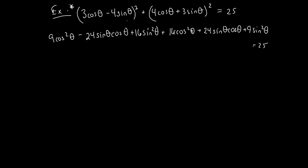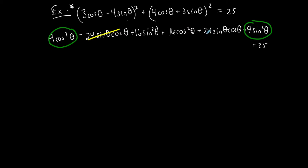Okay, I'm going to group stuff. I like how this looks. I'll put together 9 cos²θ plus 9 sin²θ. I notice that the −24 sinθ cosθ and +24 sinθ cosθ cancel out. And then I see 16 sin²θ plus 16 cos²θ.